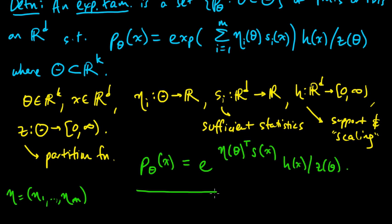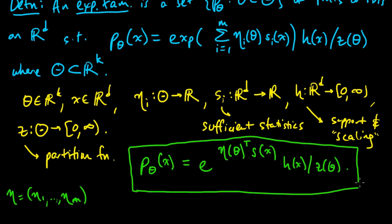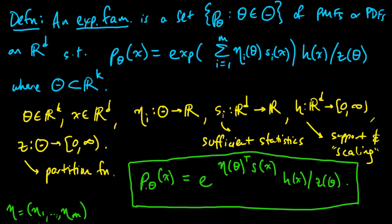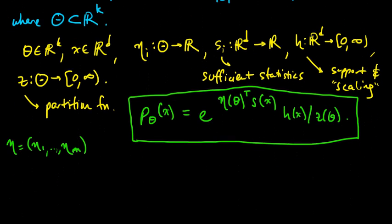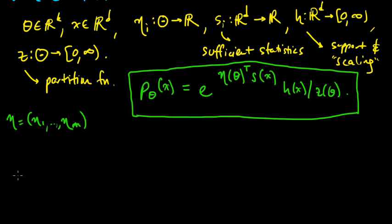So this is the nice expression for an exponential family. The family is all the distributions where θ ranges over the set Θ, all the distributions you get from this. Now let's look at some examples and start to make this very abstract, general definition more concrete.